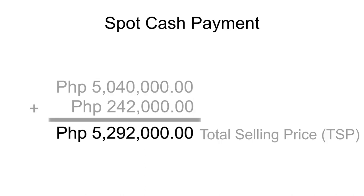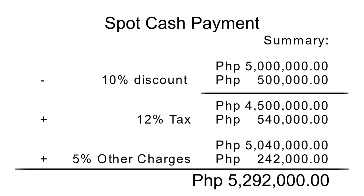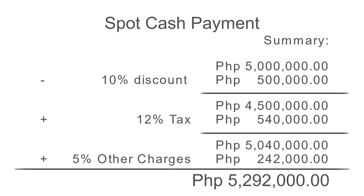The good thing with spot cash payment is that you save a lot of money, since most developers give a huge discount for this type of payment. Usually developers give fifteen percent, seventeen percent — it will depend on the developer. That's the good side when it comes to spot cash. Let's move on to the second type of payment term, which is deferred cash.